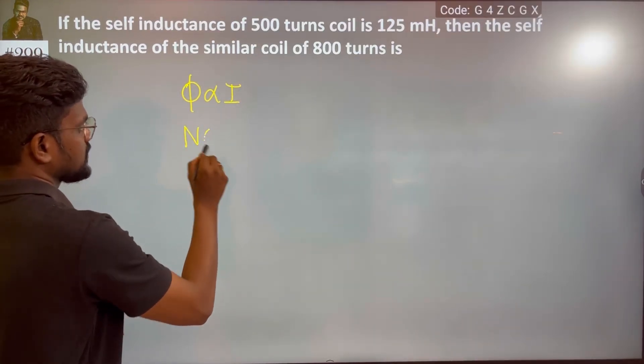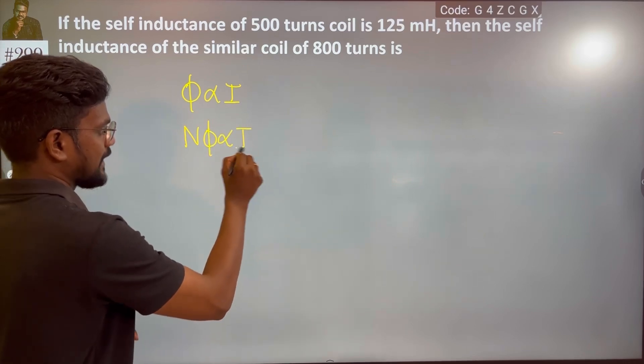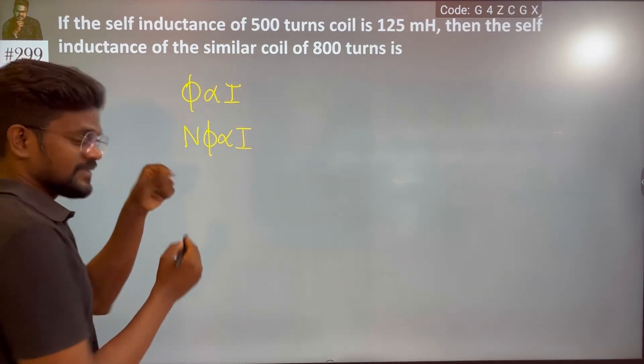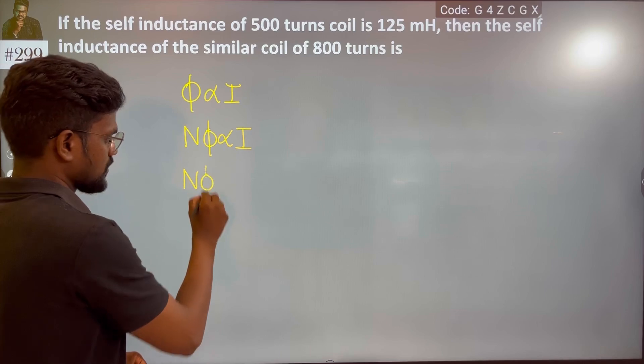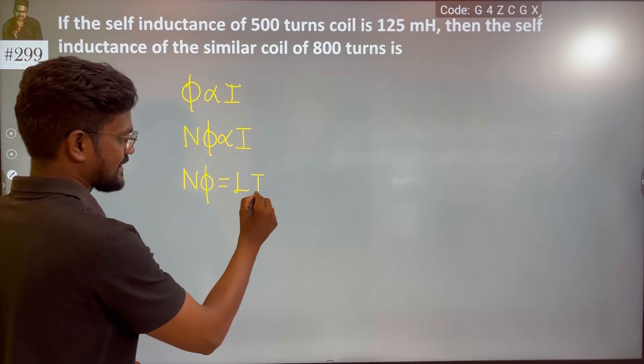If it has n number of turns, n phi is directly proportional to i. In the directly proportional, we add one constant which is self inductance L.